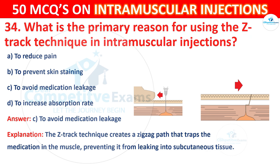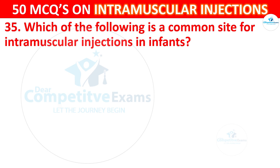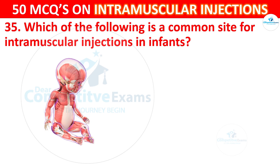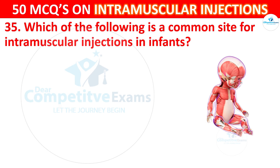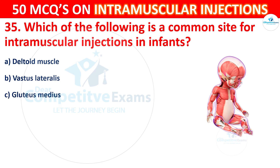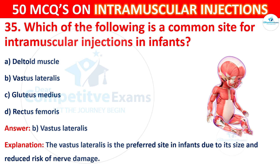Question 35: Which of the following is the common site for intramuscular injection in infants? The correct answer is B, vastus lateralis. The vastus lateralis is the preferred site in infants due to its size and reduced risk of nerve damage.